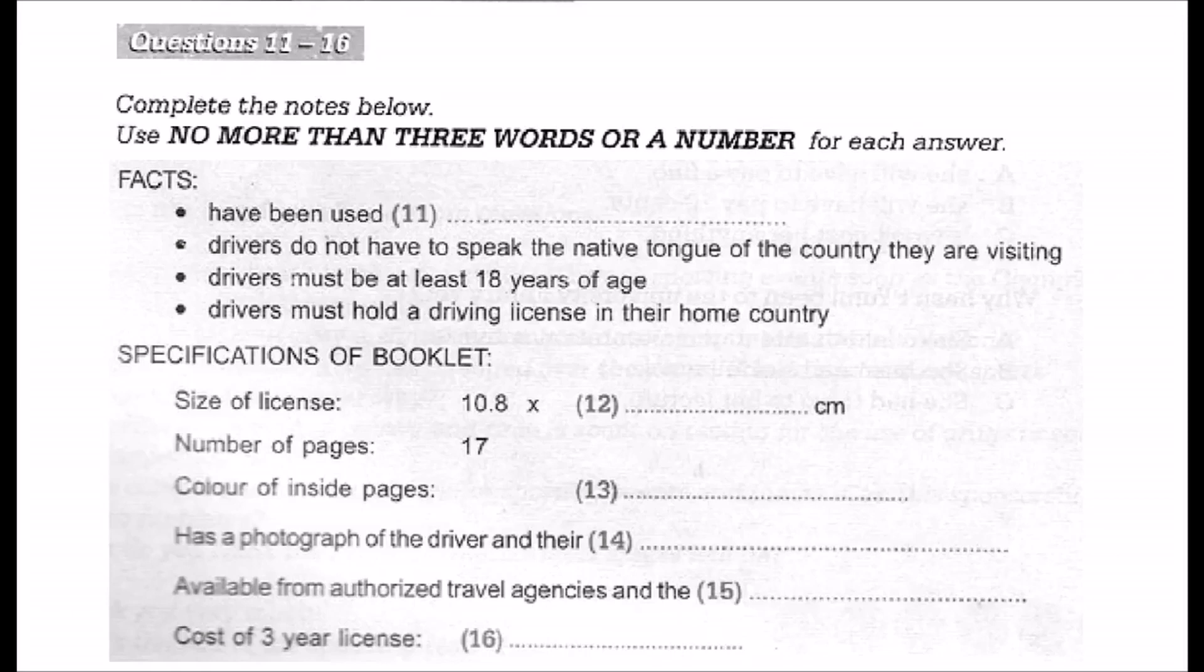I'm sure that you have all heard about international driving licenses. They have been around since 1949 when the United Nations gave approval for their use. This meant that travelers could drive freely in the 186 countries that recognize the international driving license system, regardless of the language that the drivers spoke. The only conditions were that the driver had to already hold a driving license in their home country and they had to be at least 18 years of age. International driver's licenses are well recognized. After all, they've been in use for over 50 years.